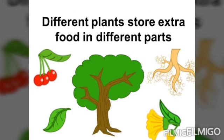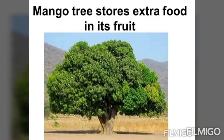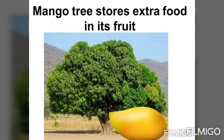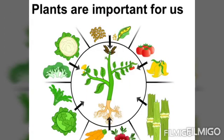Plants do not have any refrigerators to store their extra food, so we should find out where they are storing it. Different plants store extra food in different parts — it may be the root, stem, or leaves. For example, the mango tree stores extra food in its fruit, which we eat. So plants are important for us.